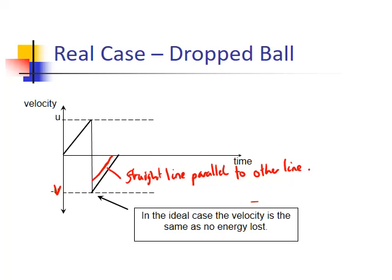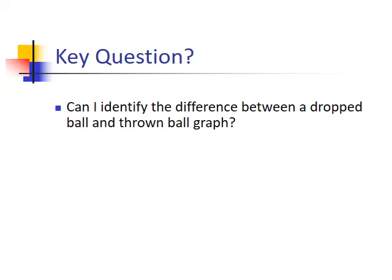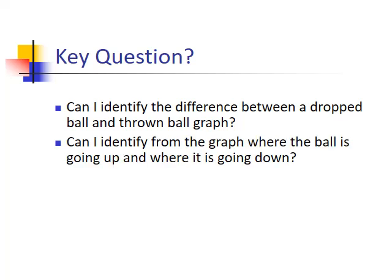Thank you for watching. I hope this has helped to explain this type of problem. So what do you need to know? You need to know the difference between a graph which has a dropped ball and a thrown ball. The dropped ball will start at zero. The thrown ball will start at a value. You need to be able to identify from the graph where the ball is going up and where the ball is going down.